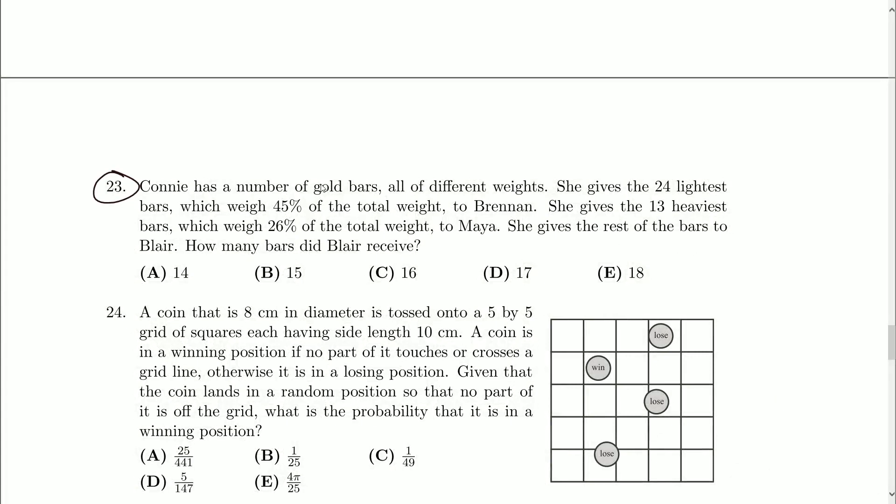Connie has a number of gold bars, all of different weights. She gives the 24 lightest bars, which weigh 45% of the total weight, to Brennan. She gives the 13 heaviest bars, which weigh 26% of the total weight, to Maia. She gives the rest of the bars to Blair. How many bars did Blair receive?